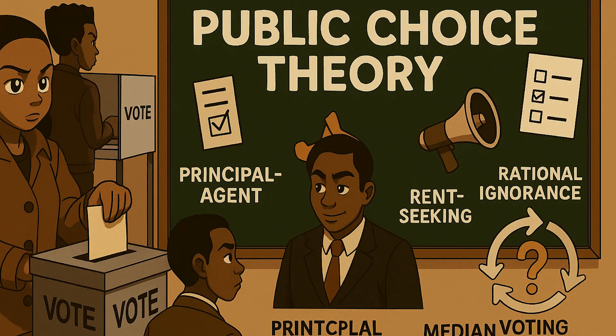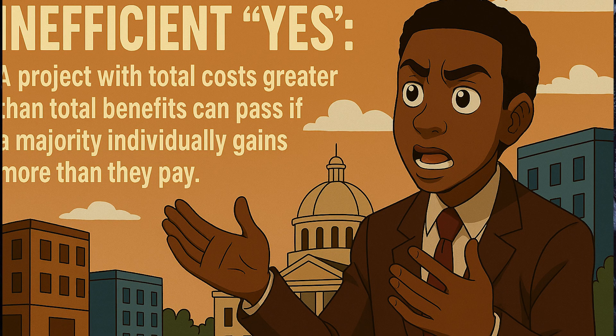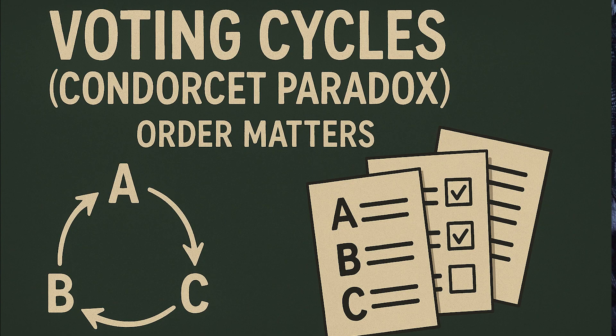Public choice theory applies economic thinking to politics. Even with good intentions, voting systems can misfire. Two classic voting failures: first, inefficient no — a project with total benefits greater than total costs can still lose if a majority of individuals each pay more than they personally gain. Second, inefficient yes — a project with total costs greater than total benefits can pass if a majority each gain more than they pay.